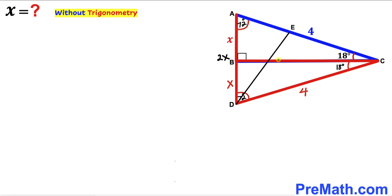In this next step I have dropped the angle bisector DE onto side AC. Since DE is an angle bisector, this angle is equal to this angle. We divide this 72 degrees into 2 parts — the first angle is going to be 36 degrees, and likewise this second angle is going to be 36 degrees as well.